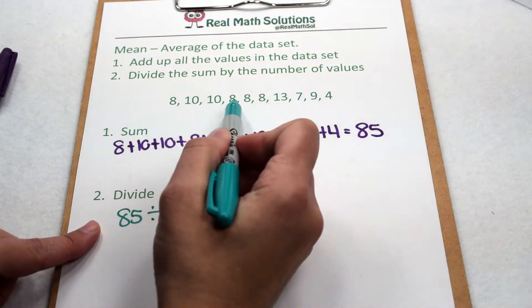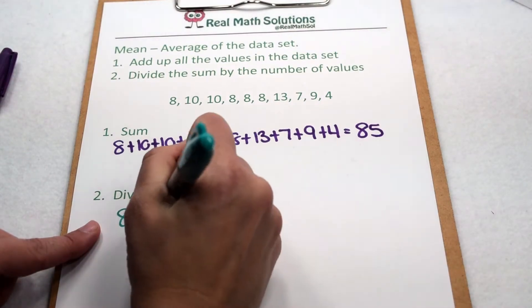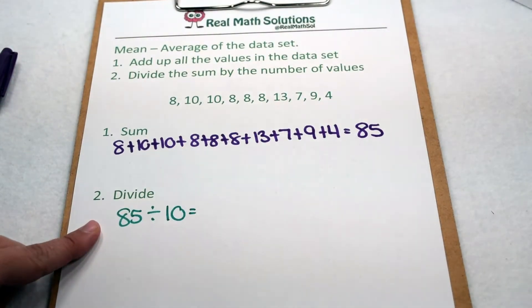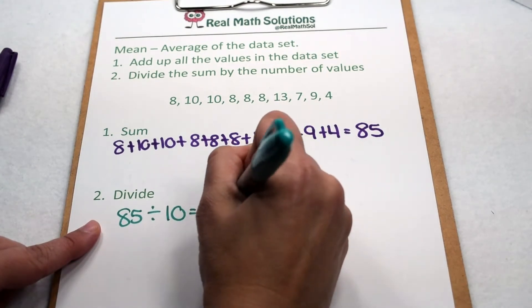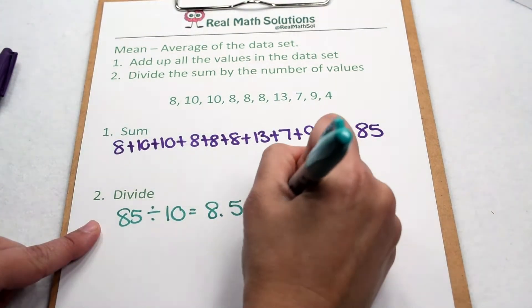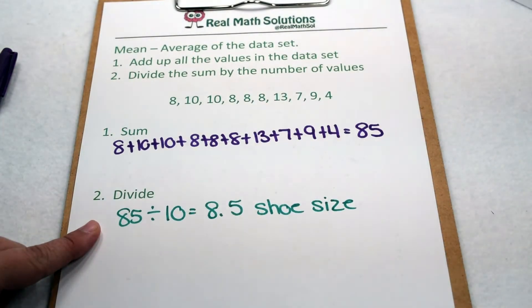Well, there are 1, 2, 3, 4, 5, 6, 7, 8, 9, 10 people in our survey. So we need to do 85 divided by 10. When we do 85 divided by 10, that comes out to be 8 and a half. So that means 8 and a half is our average shoe size for this group of friends.